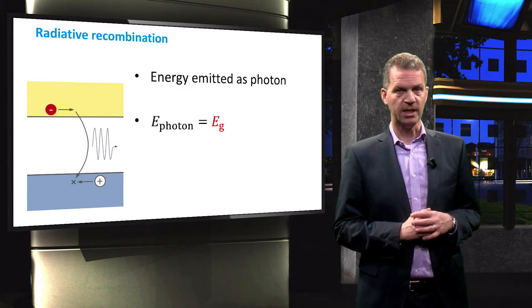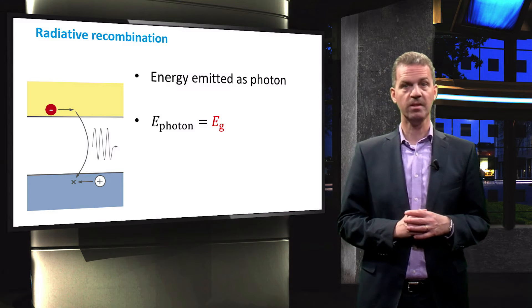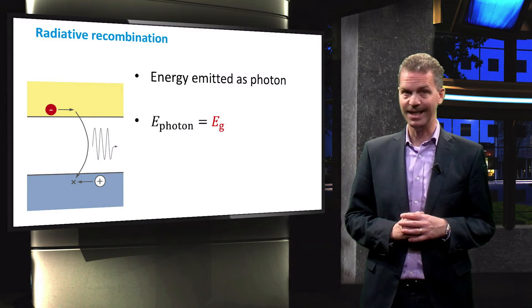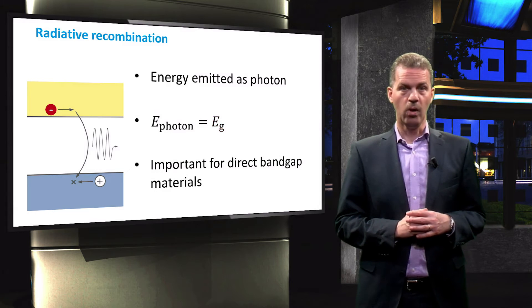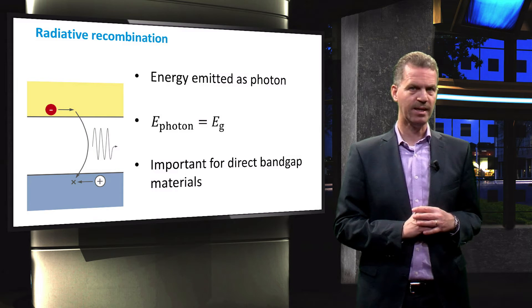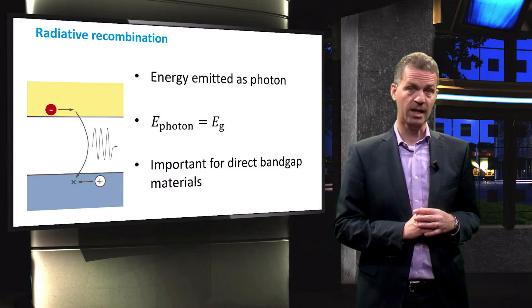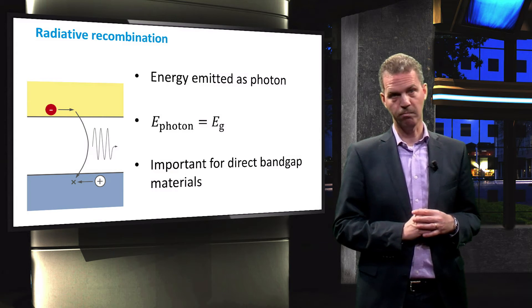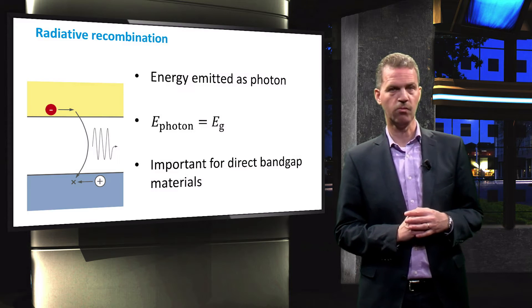Radiative recombination is, in fact, the mechanism that light-emitting diodes or LEDs utilize. Radiative recombination is very significant in direct bandgap semiconductors, but relatively rare in indirect bandgap semiconductors like crystalline silicon.